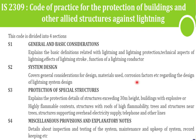IS 2309 has four sections. Section 1 is general and basic considerations — covering basic definitions related to lightning, lightning protection, technical aspects of lightning, effects of lightning, and the function of lightning conductors. Section 2 is system designing, covering general considerations of design, materials used, and corrosion factors regarding the design of a lightning protection system.